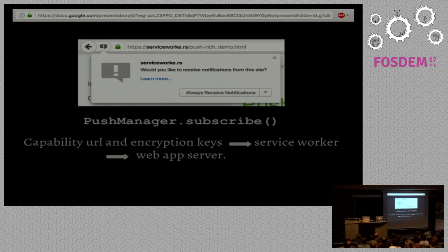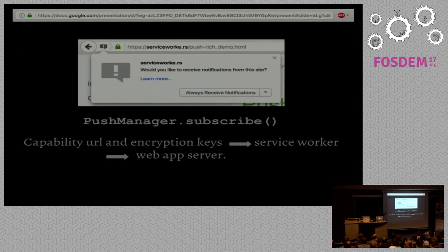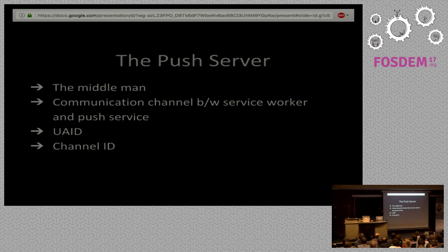Coming to the next step: when you visit a website, you must have seen a pop-up asking your permission whether you'd like to receive notifications. You can always choose to receive or block them. Once you click 'always receive notifications,' PushManager.subscribe() is called. What this does is subscribe the service worker with the push server so that it's able to receive push notifications. A promise is returned which resolves into the subscription. The push server basically acts as a middleman between your web app server and the client, routing the payload between them, and the service worker has a communication channel with the push service.